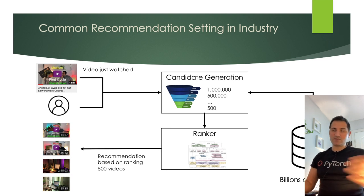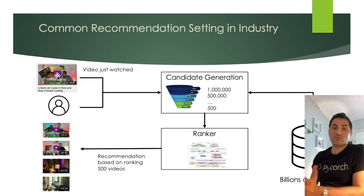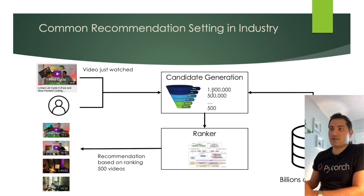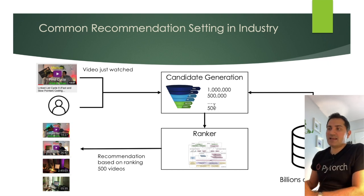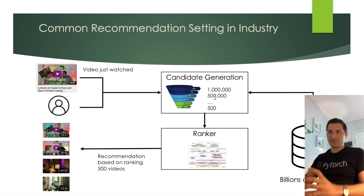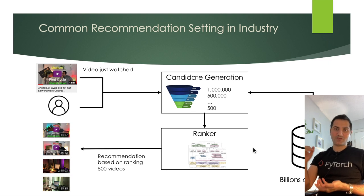This is done in a funnel or layer-based fashion. From billions of videos, they first select one million using something as simple as a SQL query on an index table. Then logistic regression narrows it to 500,000, then a random forest narrows it further, ending up with 500 most relevant candidates. After selecting those 500 candidates, the ranker — a very sophisticated model — quickly ranks them and recommends them to the user.